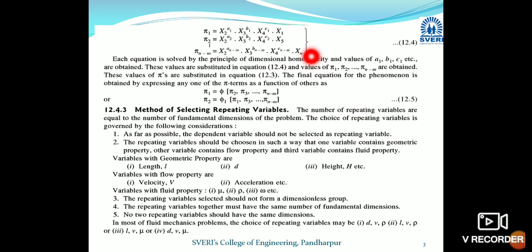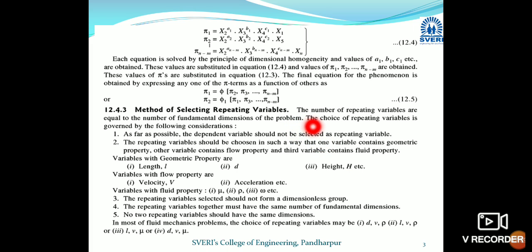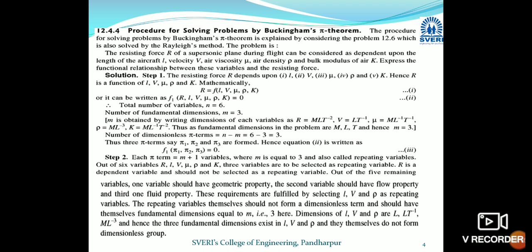Now how do we select repeating variables? The number of repeating variables equals the number of fundamental dimensions. As a priority, the dependent variable should not be selected as a repeating variable. So if x1 is the dependent variable, x1 should not be selected as a repeating variable.